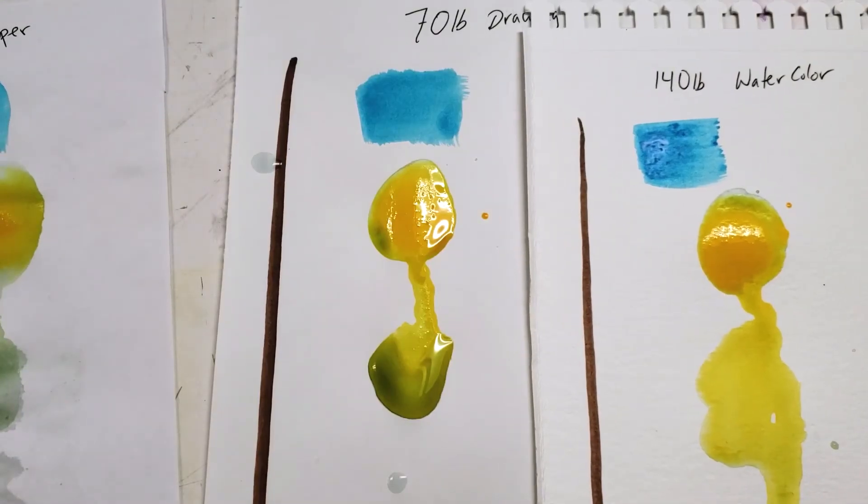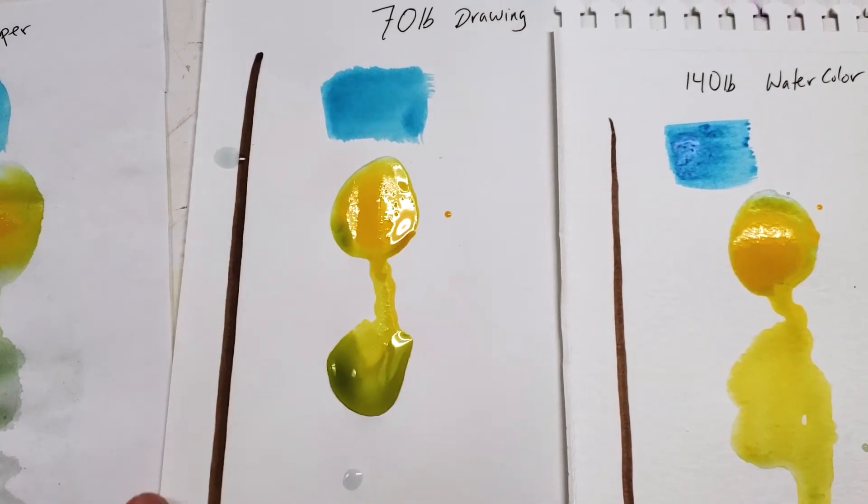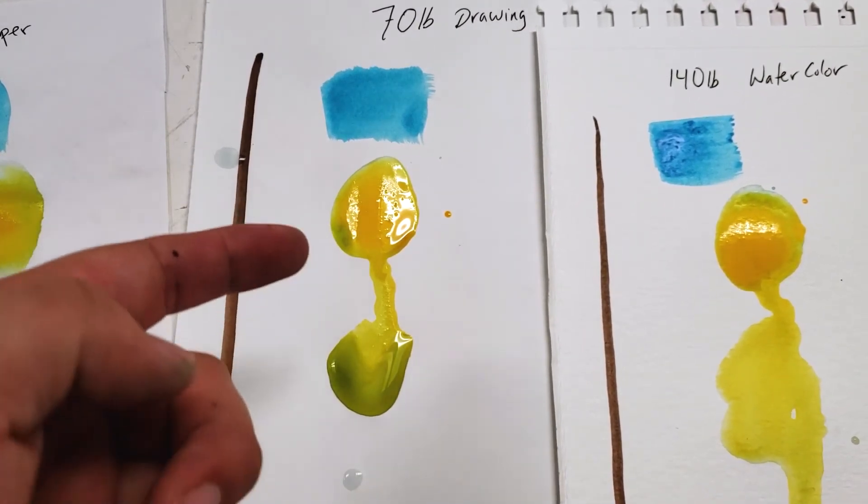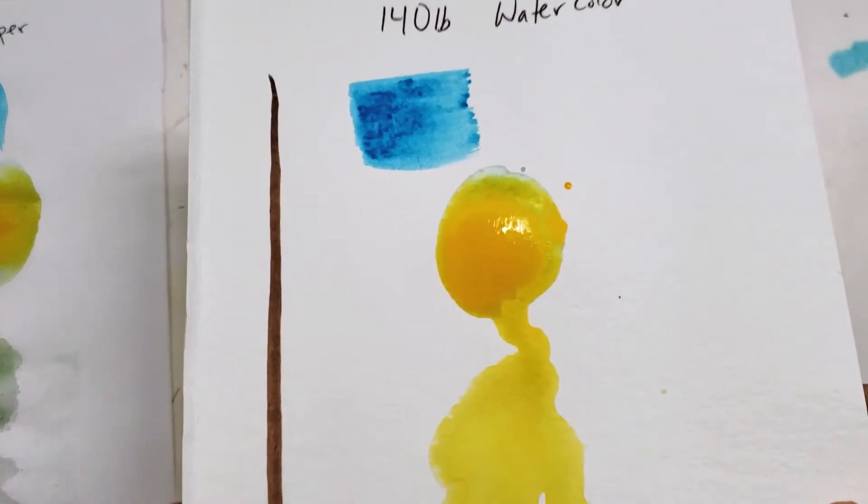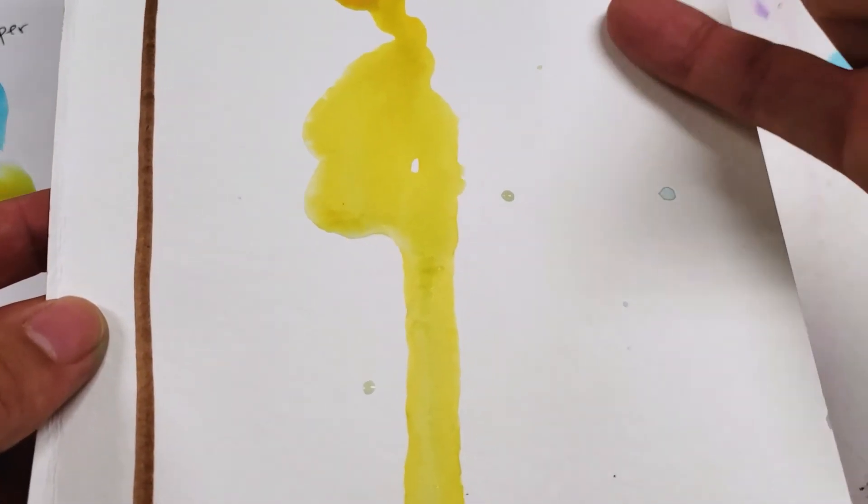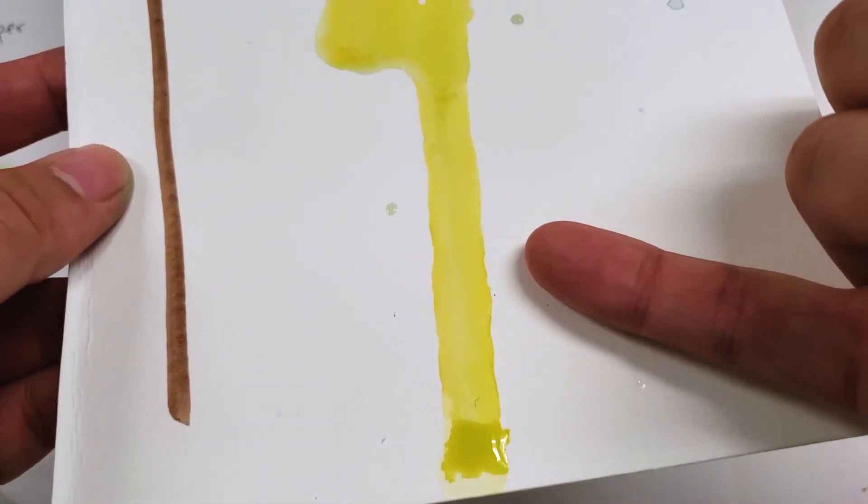The drawing paper is holding up okay but it's still kind of wet. The drawing paper has some drying to do because it hasn't absorbed the water. And you can see that the watercolor paper is almost completely dry.